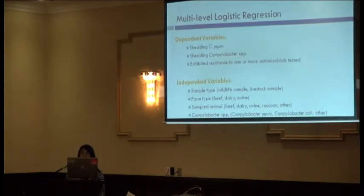Multi-level logistic regression analysis was conducted with a random effect for farm location, because isolates would presumably cluster by farm. We assessed how the prevalence of CGF40 Campylobacter species shedding would be influenced by different sample types (wildlife or livestock), sampled animals (beef, dairy, swine, raccoon, or other wildlife), and farm type. Other represents other wildlife species, grouped together due to small sample sizes.